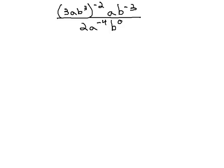In this video, we're going to simplify the expression (3ab³)^(-2) times ab^(-3) all over 2a^(-4)b^0.